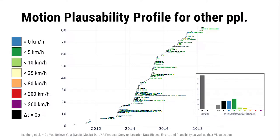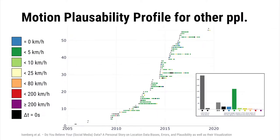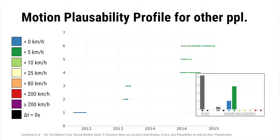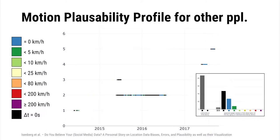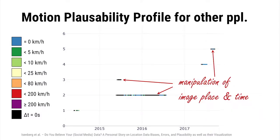We also add a histogram of the different speed classes for better comparison. Here are examples from the dataset for other people: one that is mostly believable, another mostly believable case, a believable case with fewer entries, one where the poster always put images at the same location, and finally one where the time was also manipulated — though this may be due to an early period where no time was recorded, or the same image being posted to two services simultaneously.